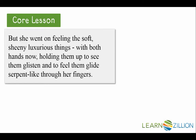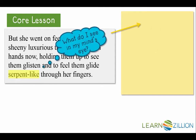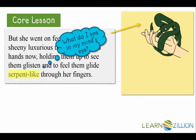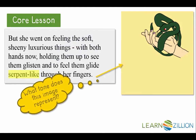Let's look at a final passage from the text. First, I'll identify the specific word choices used to create an image. The words "serpent-like" are used to describe how the silk stockings fit into Mrs. Sommers' hand. Now, I'll draw what I see in my mind's eye on a sticky note. I can see a slimy, slithering serpent gliding through Mrs. Sommers' delicate fingers. Next, I'm going to ask myself, what tone does this image represent? When I look at my image and see the stocking replaced by a serpent, the tone represented is a nervous and evil tone. I add that to my sticky note.